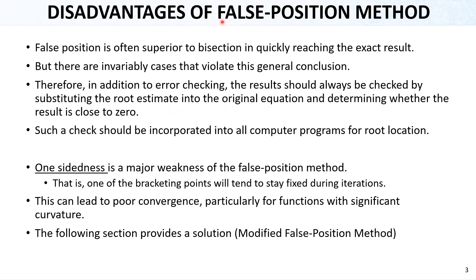When we make an estimate with the false position at one iteration, we find xr, then put it into the equation and see the result. If it is close to zero, then that is good. Such a check should be incorporated into all computer programs for root location.